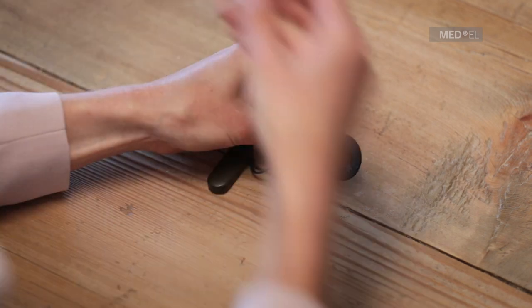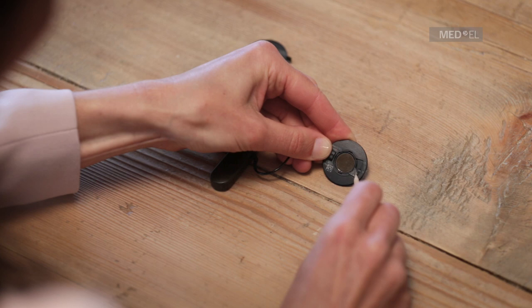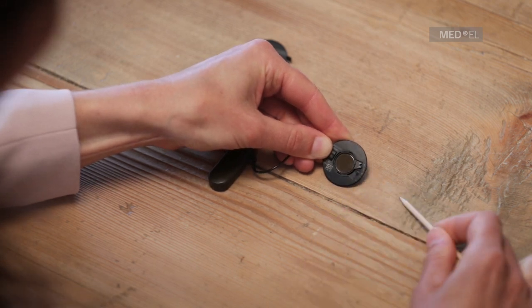Use a ballpoint pen to lock the coil in the plus position to strengthen or minus position to soften the attraction of the magnet.